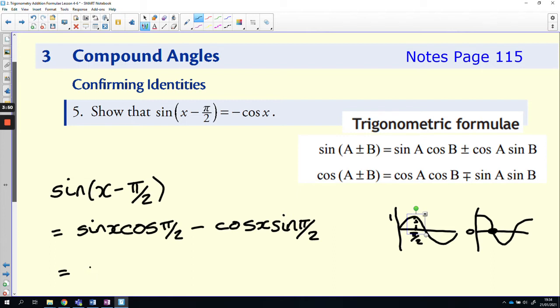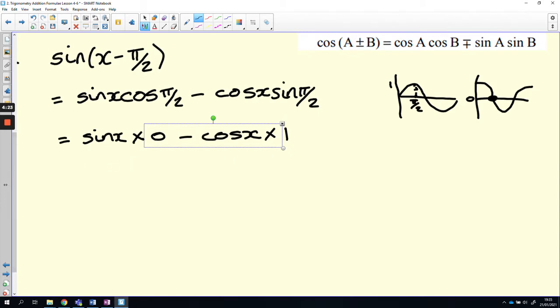So we have sin x times cos π/2. So as we've discussed, that is 0. And then minus cos x, and that's been multiplied by, as we've discussed, 1. So anything times 0 is 0. So sin x times 0 is 0. And then minus cos x times 1 is minus cos x. So 0 take away cos x is just minus cos x.